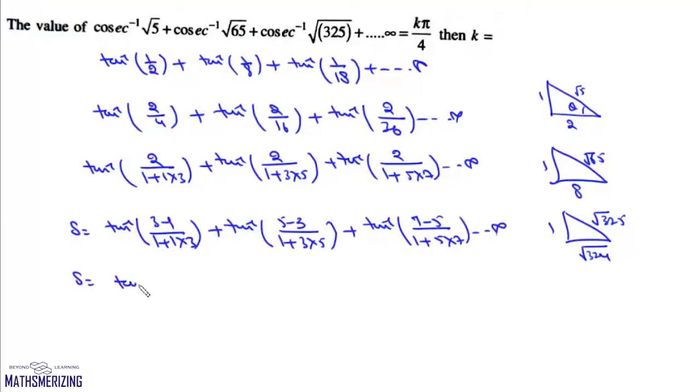So we have tan inverse 3 minus tan inverse 1, plus tan inverse 5 minus tan inverse 3, plus tan inverse 7 minus tan inverse 5. It goes all the way up to infinite. Now here 3 will cancel, 5 will cancel.